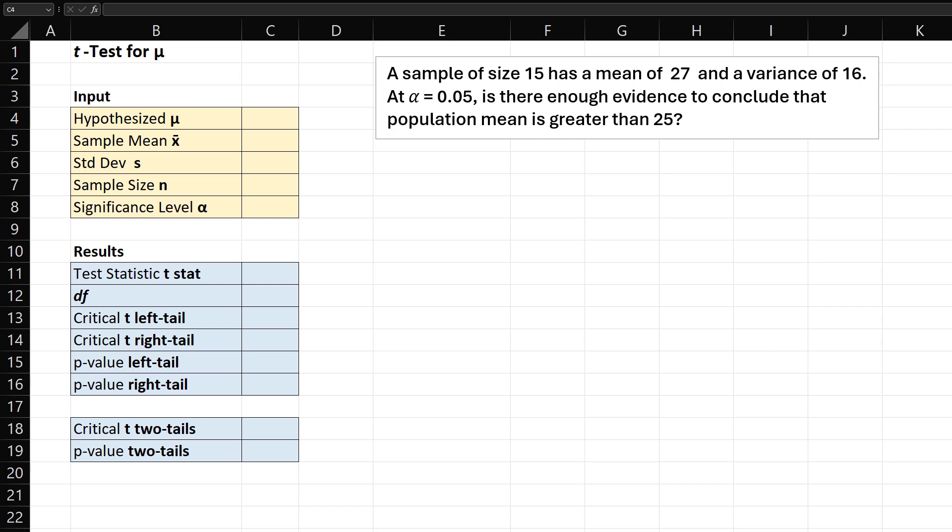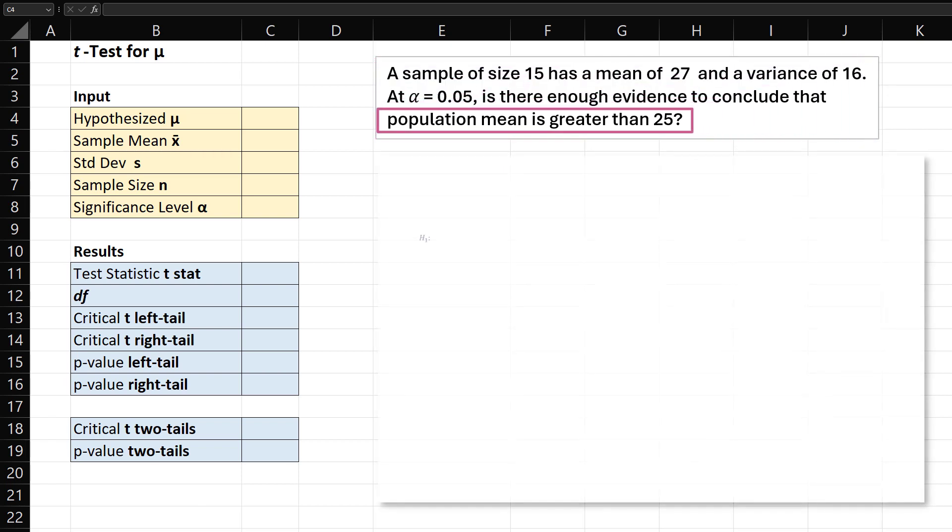In this video, I'll be showing how to use this t-test template to solve this hypothesis test question. Since we're testing if the population mean is greater than 25, the alternative hypothesis will be mu greater than 25. And the null hypothesis in many texts will be mu equal 25, but we will use less than or equal to 25 to complement the alternative hypothesis.